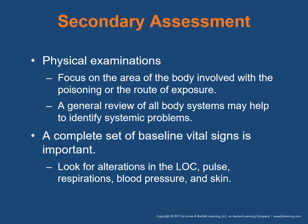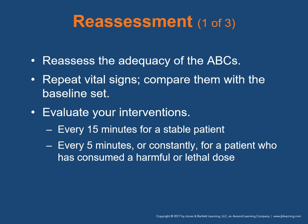In a secondary assessment, focus on the area of the body involved with the poisoning or the route of exposure. A general review of all body systems may help identify a systemic problem. Complete a set of baseline vital signs — look for alterations in level of consciousness, pulse, respirations, blood pressure, and skin. Reassess the adequacy of the ABCs and correct as needed. Repeat vital signs: every 15 minutes for a stable patient, every 5 minutes for an unstable patient, or constantly for a patient who has consumed a harmful or lethal dose.